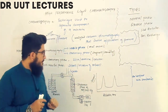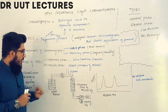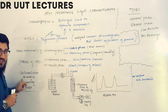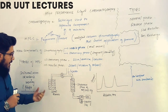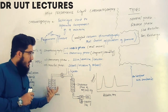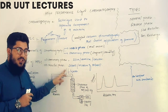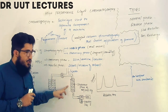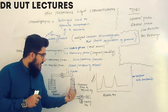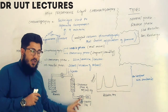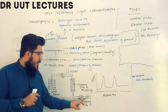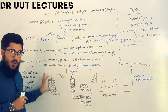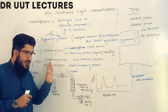Now let's come to the instrumentation — the materials required to perform HPLC. We need a solvent reservoir, a pressure pump, a sample injector, and a column in which we put our stationary phase. We also need a detector, a collecting tube, and a readout device. These are the instruments required.